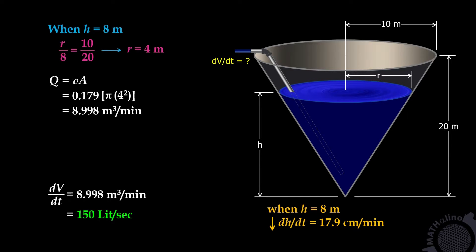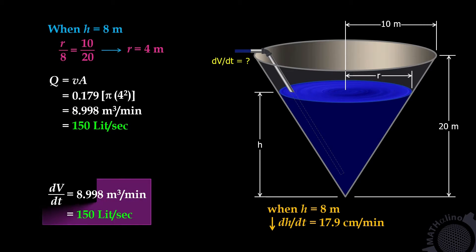If we convert this into liters per second, multiply by 1,000 over 60. We have an answer equal to the answer in our conventional solution: 150 liters per second.